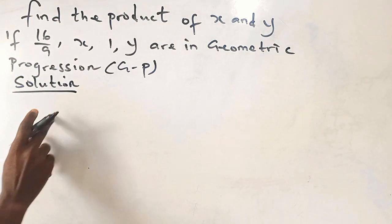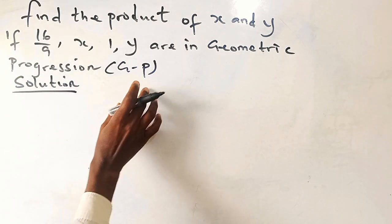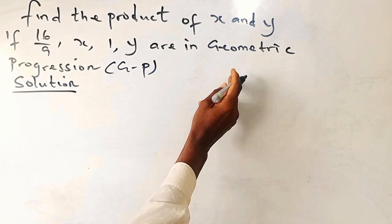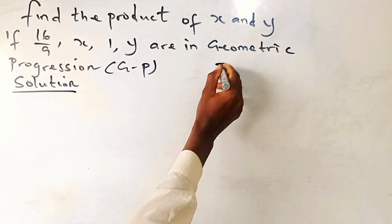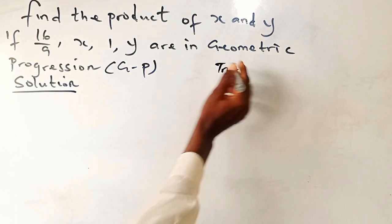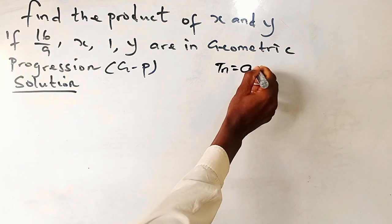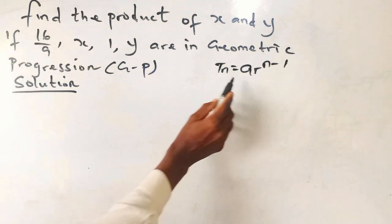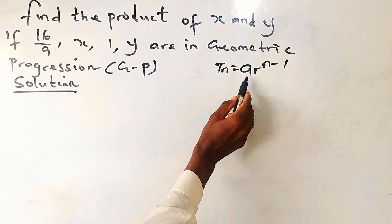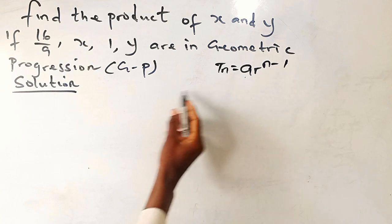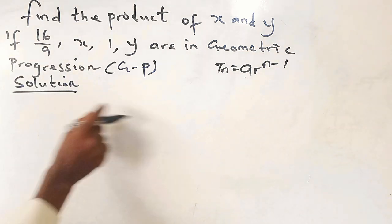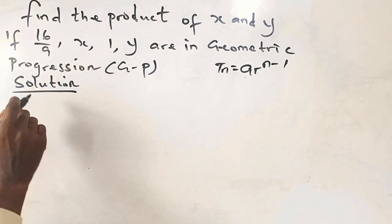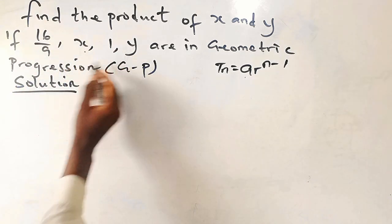So, how do we resolve this? The formula we use for geometric progression is given as: every term equals a times r to the power n minus 1, where a is the first term and r is the constant ratio.